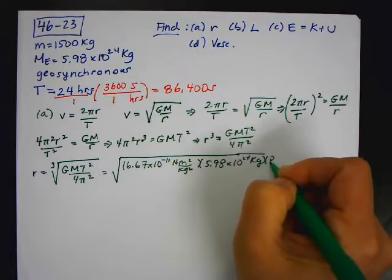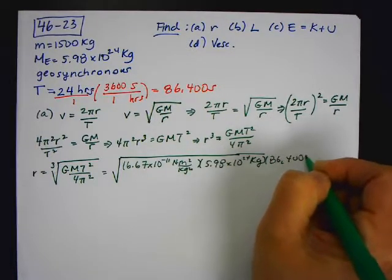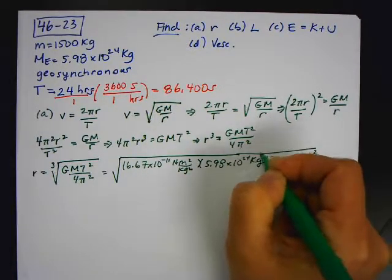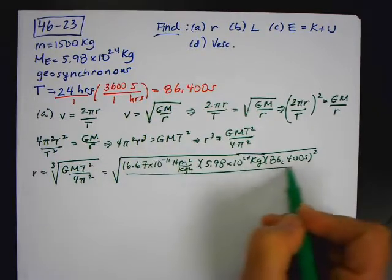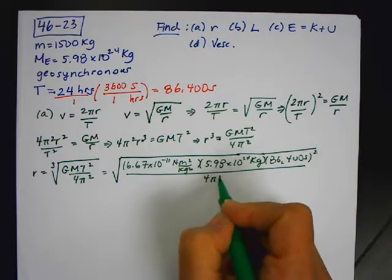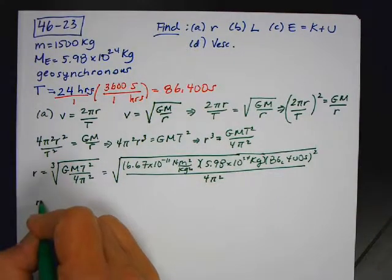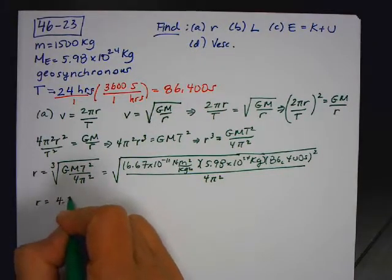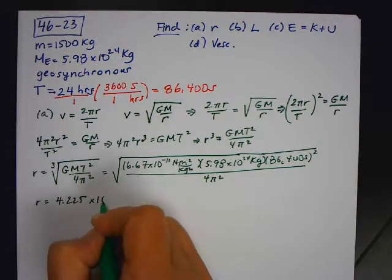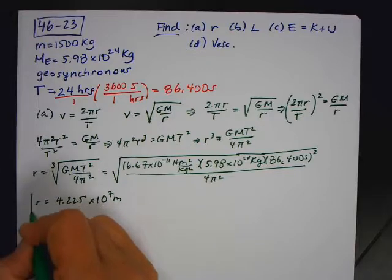times 86,400 seconds squared divided by 4π². And when I do all that, R came out to be 4.225 times 10 to the 7 meters. So that was part A.